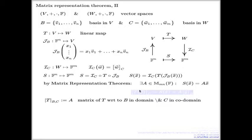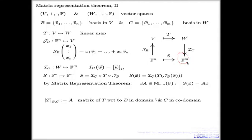In our attempt to recover such a matrix, we follow the same steps as in the simple version of the Matrix Representation Theorem, because all we need to do is apply the simple algorithm to the newly constructed map S. The simple version says: choose the standard basis in F^n, apply S to every element of the standard basis, and collect all results as columns — the results will be m-tuples. It's the same procedure, but this time we do it on S rather than the original T, because T doesn't work on n-tuples; it works on some abstract vector space V.